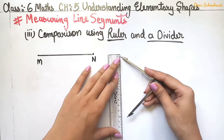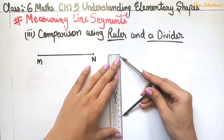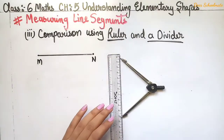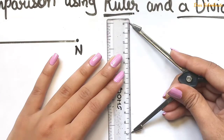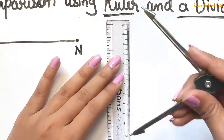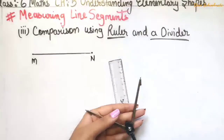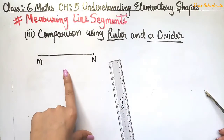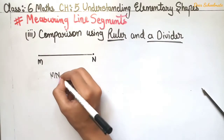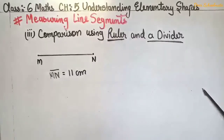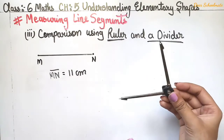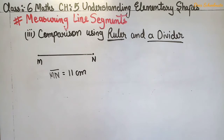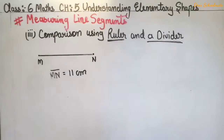Without changing the divider opening, we place it on the ruler with one point at 0. The second point tells us the length. Here, line segment MN is 11 cm long. Using a divider and a ruler, we can accurately measure any line segment, because the divider holds the fixed measurement and we simply read it off the ruler.